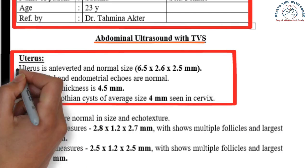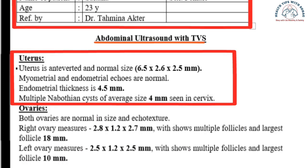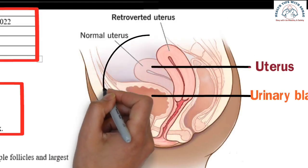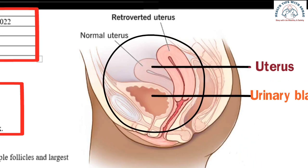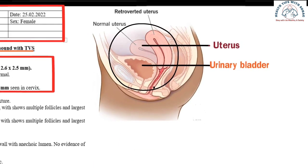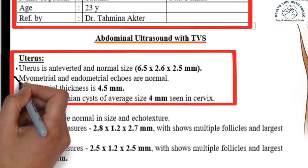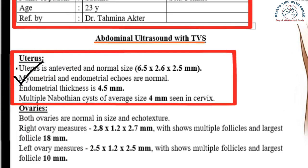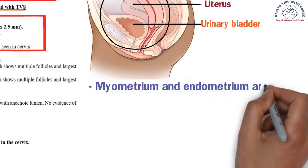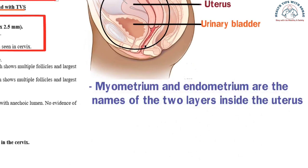Number 1: Uterus. It is written that the uterus is anteverted and normal in size. The uterus is generally either anteverted or retroverted. Notice the picture — if the uterus is in front of the bladder, it's called an anteverted uterus, and if the uterus is toward the back of the urinary bladder, it's called a retroverted uterus. Having an anteverted uterus is good. It is also written that myometrial and endometrial echoes are normal. The myometrium and endometrium are the names of the two layers inside the uterus, and the report says they are normal.